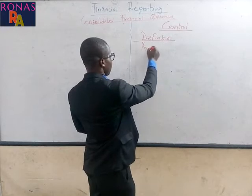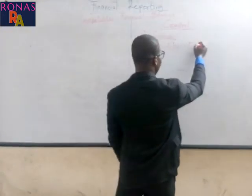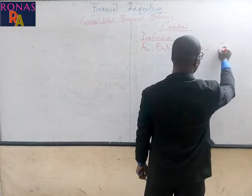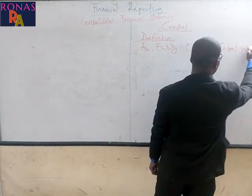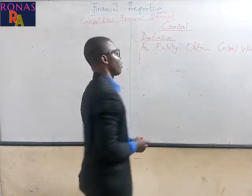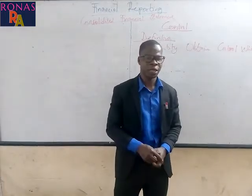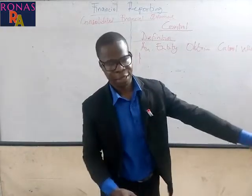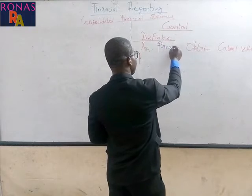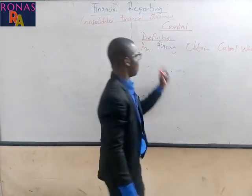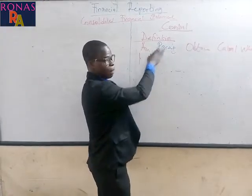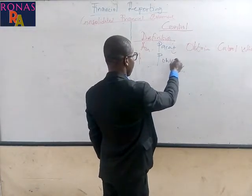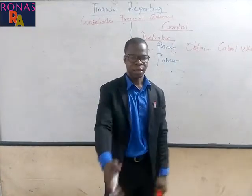We say an entity obtains control of another entity. The first condition is when the entity is having power over another entity — we can also say the parent obtains control when that parent has power over the other entity. So anytime a parent is having power over another entity, then we can say that there is control.